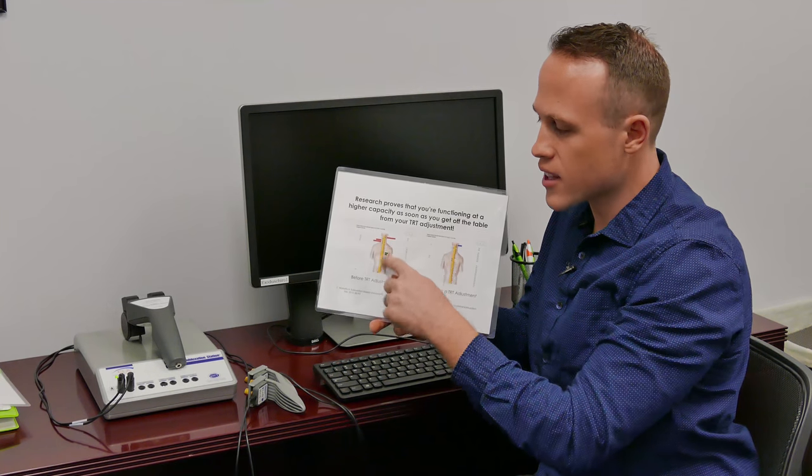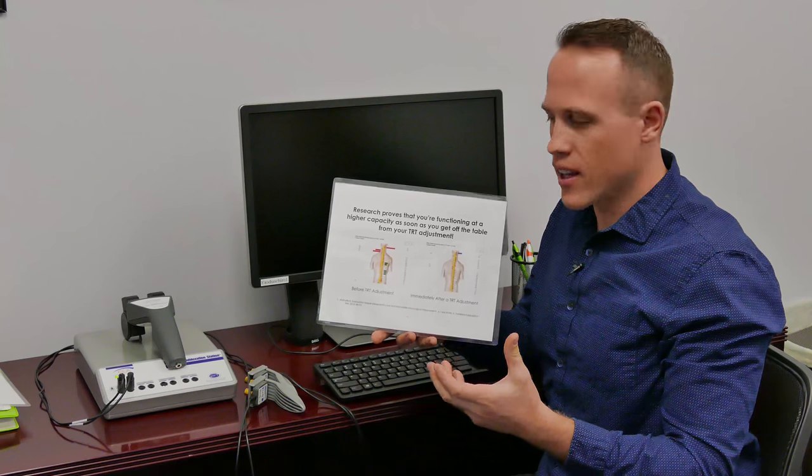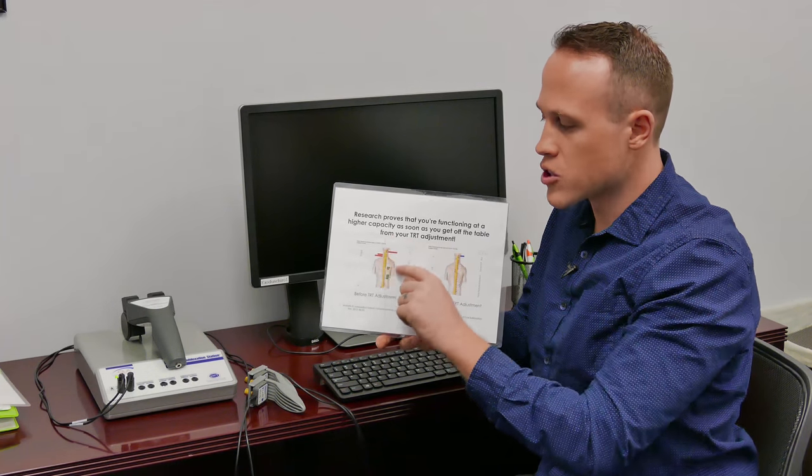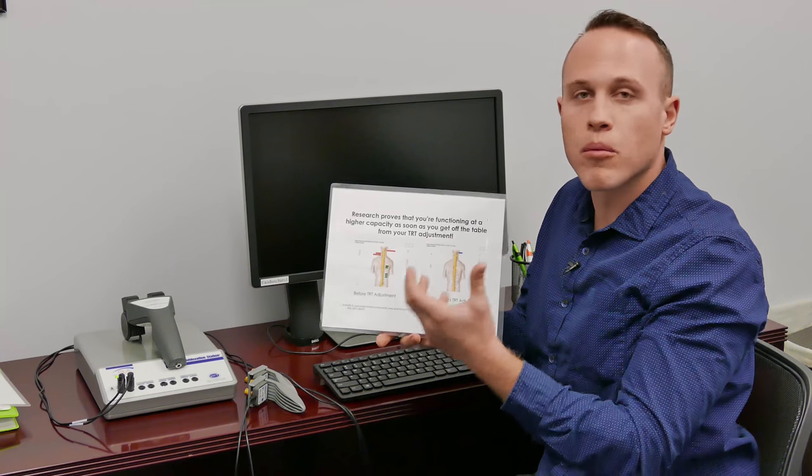We want all of these bars on this scan to be white. That means within normal range. Green would be mild, blue is moderate, and he actually had a bunch of red, which is severe pressure at the upper part of his neck.